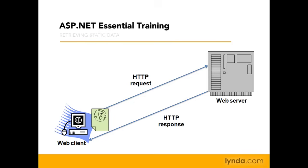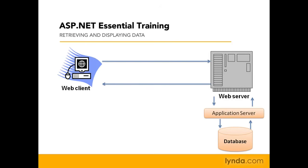When you move to the dynamic environment, the application server software is installed on the same computer as the web server — let's say Internet Information Services and ASP.NET. The application server, in this case ASP.NET, can communicate with the database and with other server resources. The web client makes the HTTP formatted request, the web server talks to the application server, the application server talks to the database and other network resources, and then the web server constructs an HTML formatted response, which is sent back to the web client.